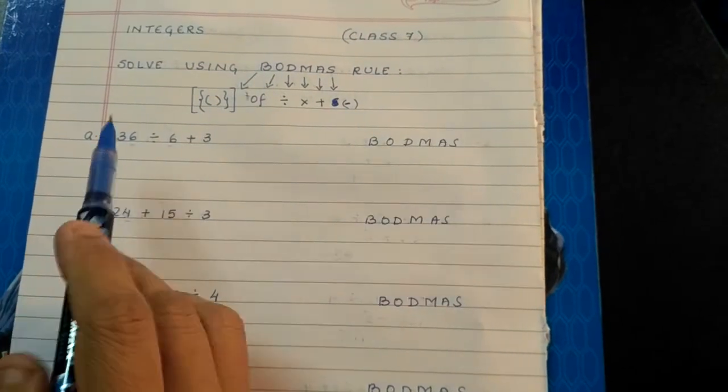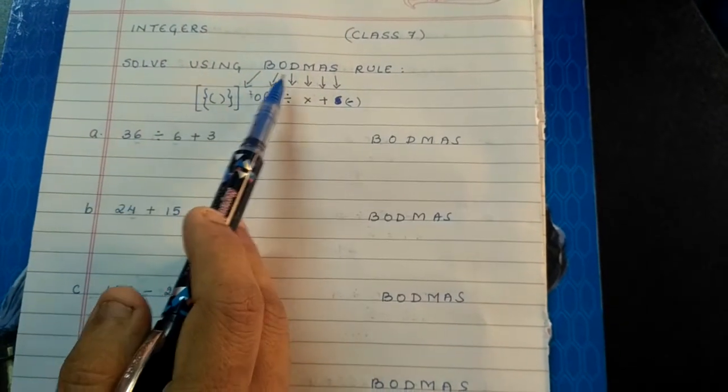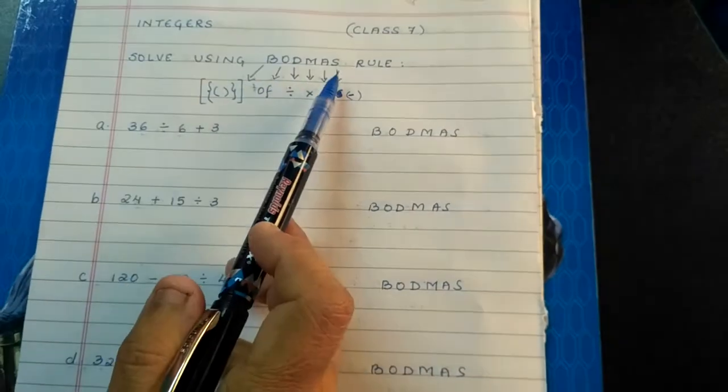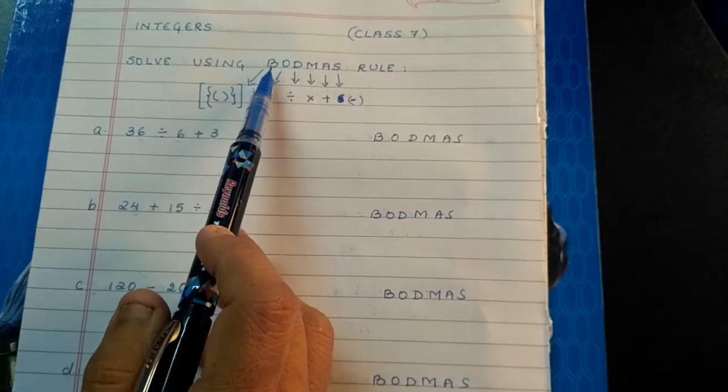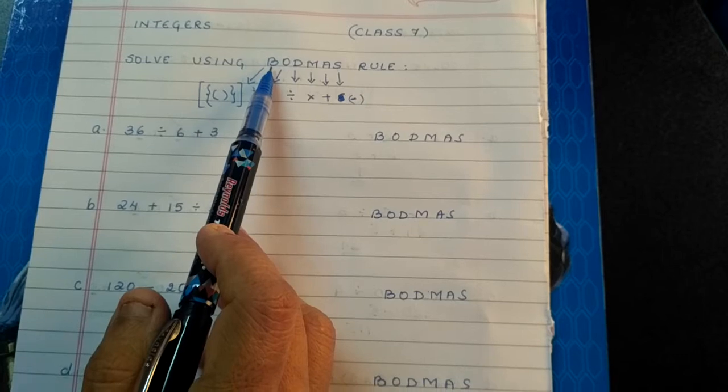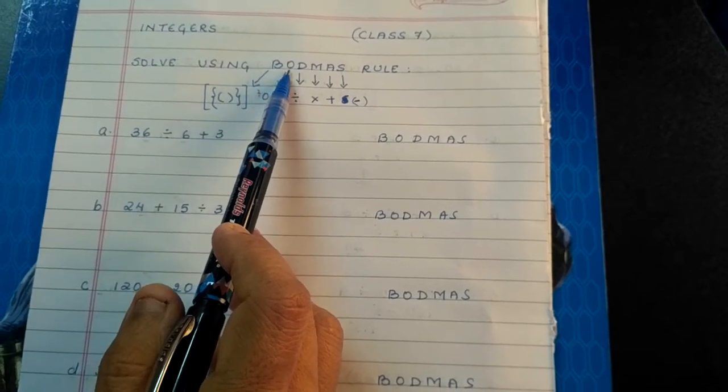So children, today we are going to solve sums using BODMAS rule. What does BODMAS rule say? That you have to do arithmetic operations according to this.